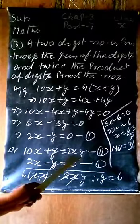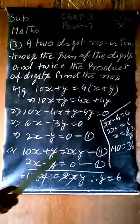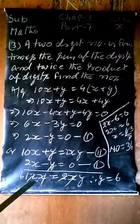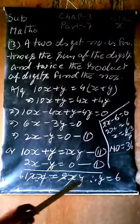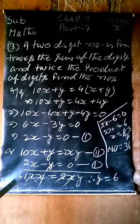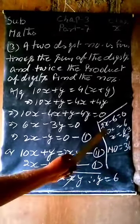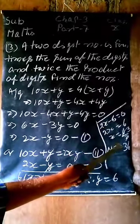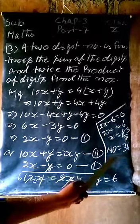If we add both equations, then y cancels. 12x equals 2xy. Here x cancels with x. 12 and 2 cancel to give 6. So y equals 6. Now in any equation, put y value, then x is 3. So the number is 36.